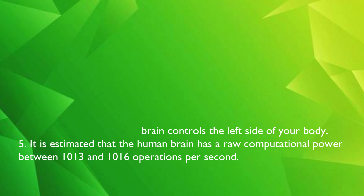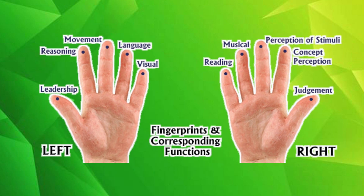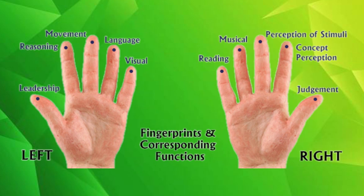Each and every finger of our hand is controlled by our brain. The fingers of our right hand are controlled by our left brain, while the fingers of our left hand are controlled by our right brain.